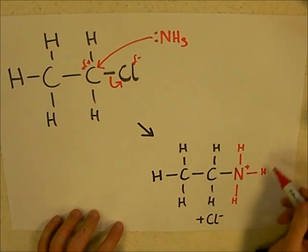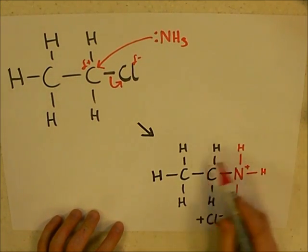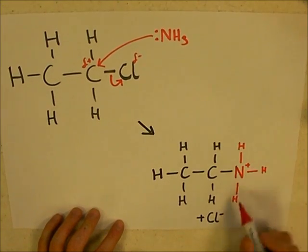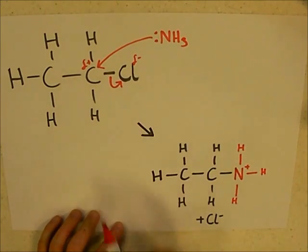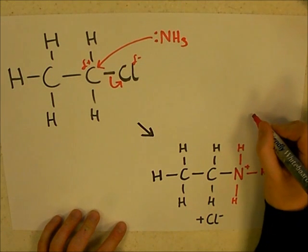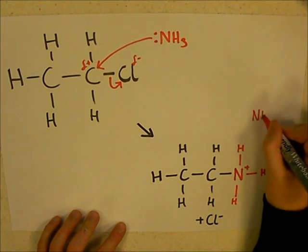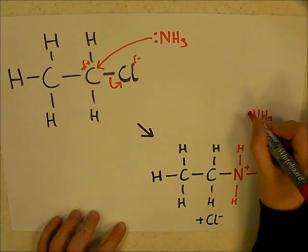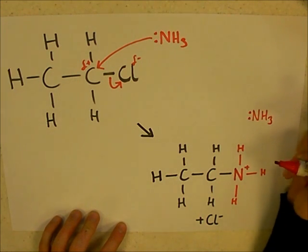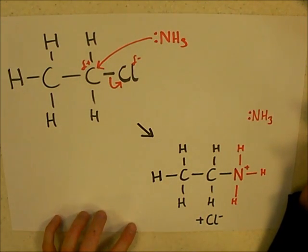So something has got to resolve to get this to kind of a normal state. We've also got our Cl- released from here. Now, the way that this resolves itself is a second ammonia comes along, this time acting as a base. Now, a base is something that wants to take a hydrogen or a hydrogen ion.